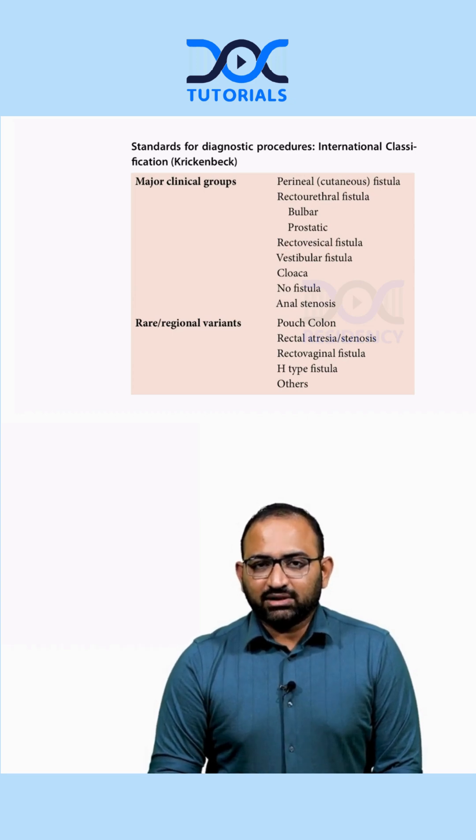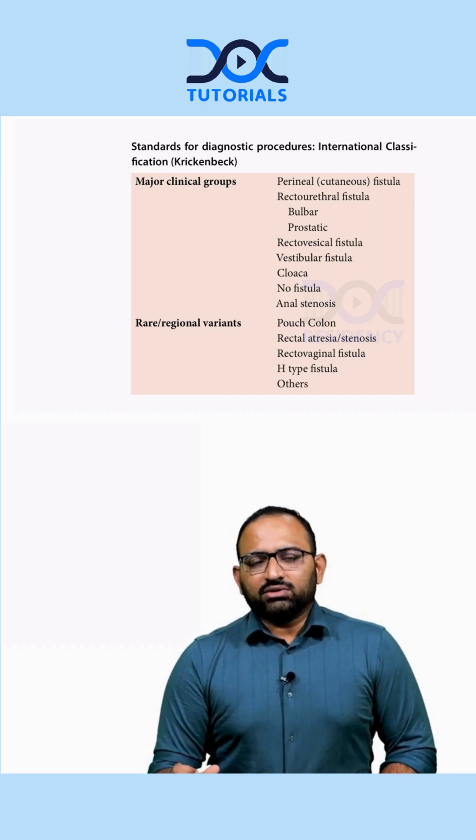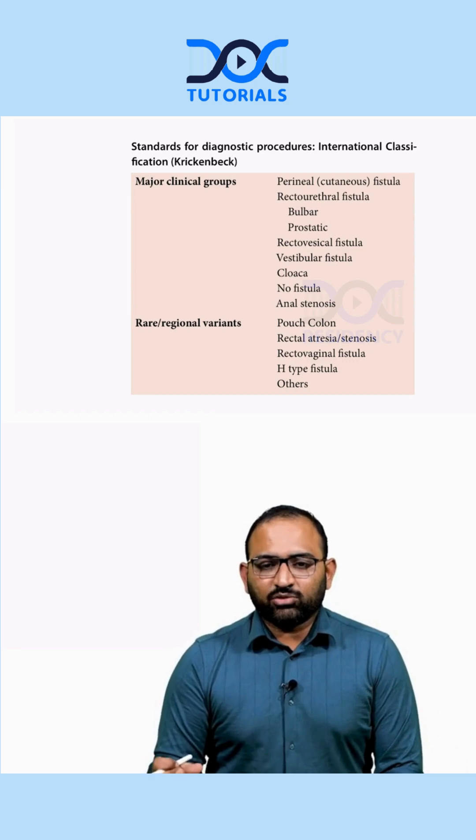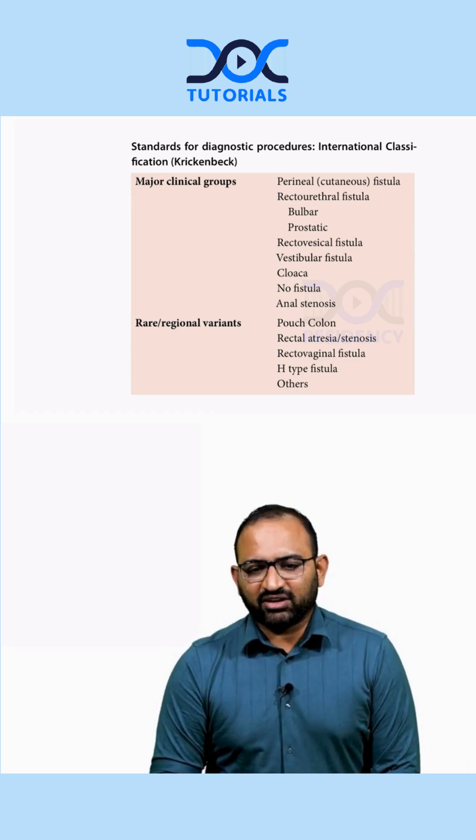Rectovesical fistula is seen in both males and females. The rectum opens into the bladder. It is a high variant of anorectal malformation.